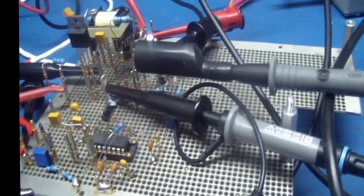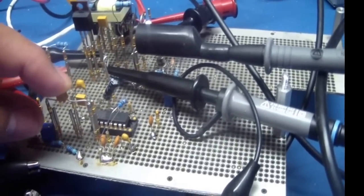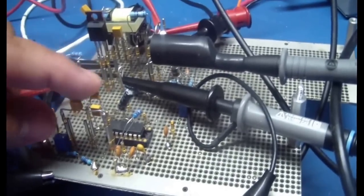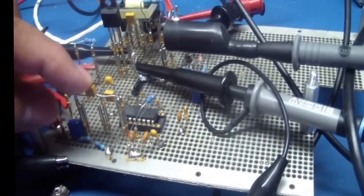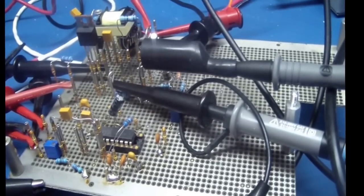Hopefully in the next video I'll go ahead and close the loop on it, and I'll show how to select the compensation resistors and maybe even do a Bode plot of the open loop response.